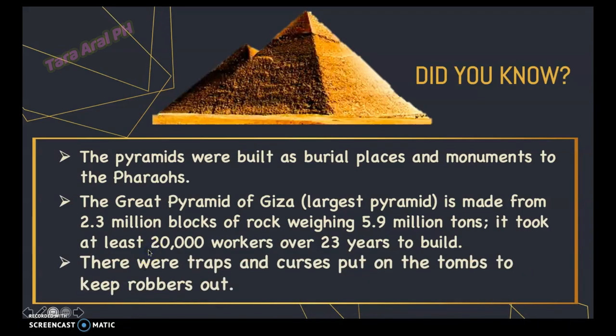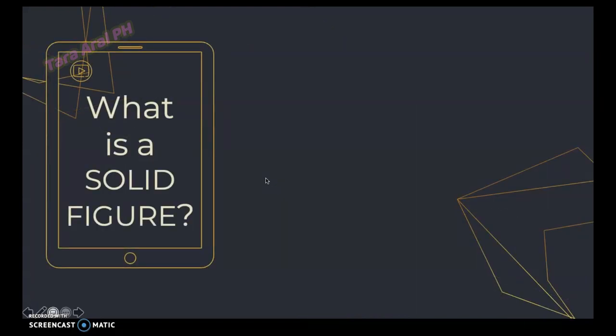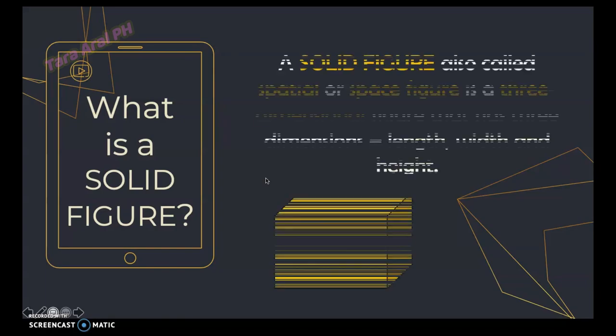There were traps and curses put in the tombs to keep robbers out, and the Pyramid of Giza has a base of a perfect square. This pyramid, by the way, is an example of a solid figure. Now, what is a solid figure?